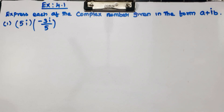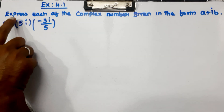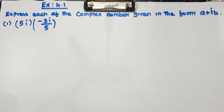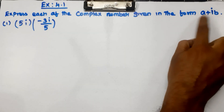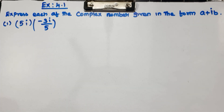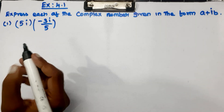Hello students! In this video we are doing Exercise 4.1, Chapter: Complex Numbers and Quadratic Equations, Question No. 1. You can check the basic format in your introduction part with paper and pen and learn the basic steps. This exercise is very easy. We need to express each of the complex numbers in the form a plus ib — the a plus imaginary b format.